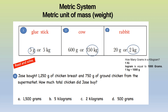Let us look at our word problem solving. Jose bought 1,250 grams of chicken breast and 750 grams of brown chicken from the supermarket. How much total chicken did Jose buy? Very good — two kilograms.